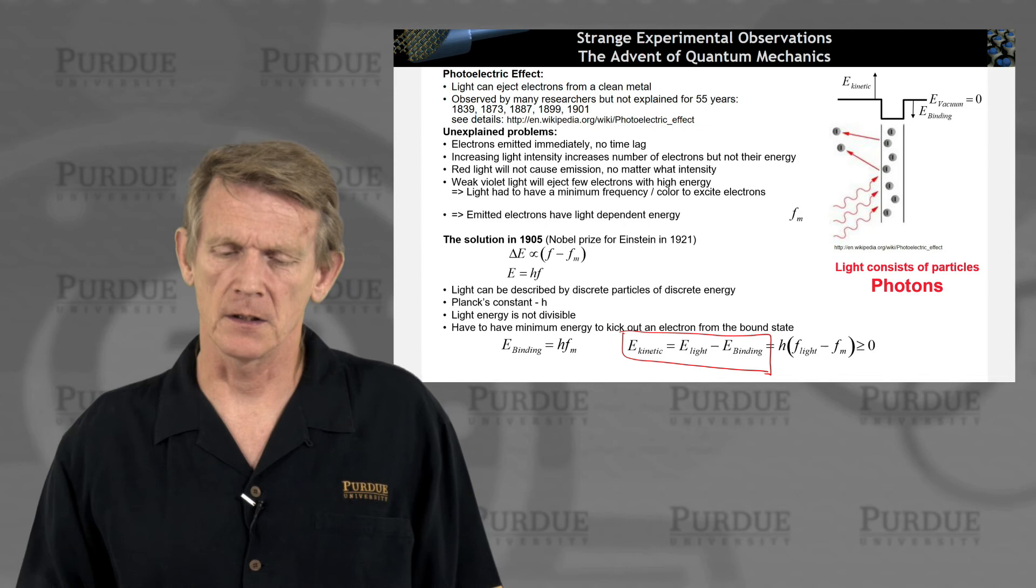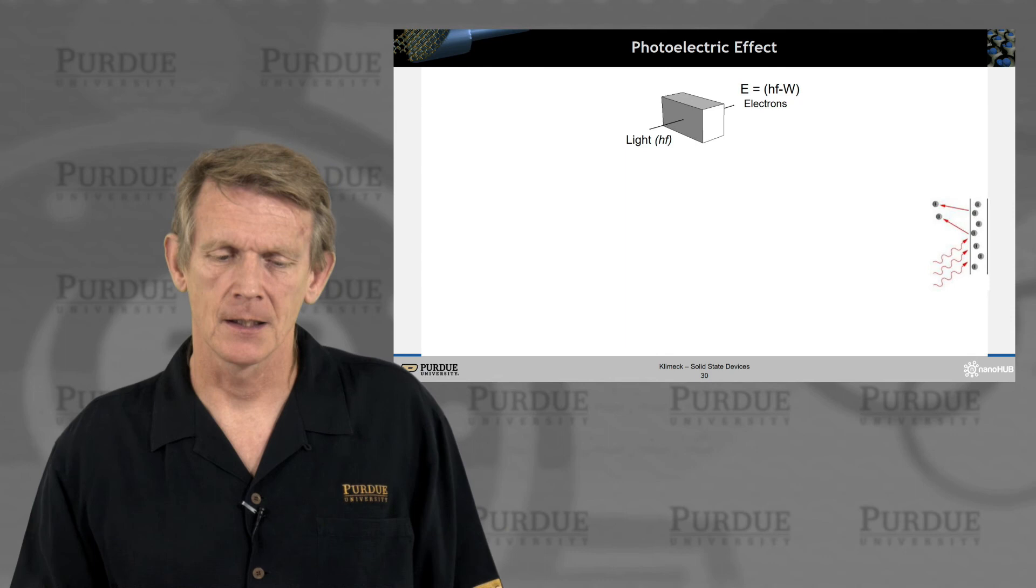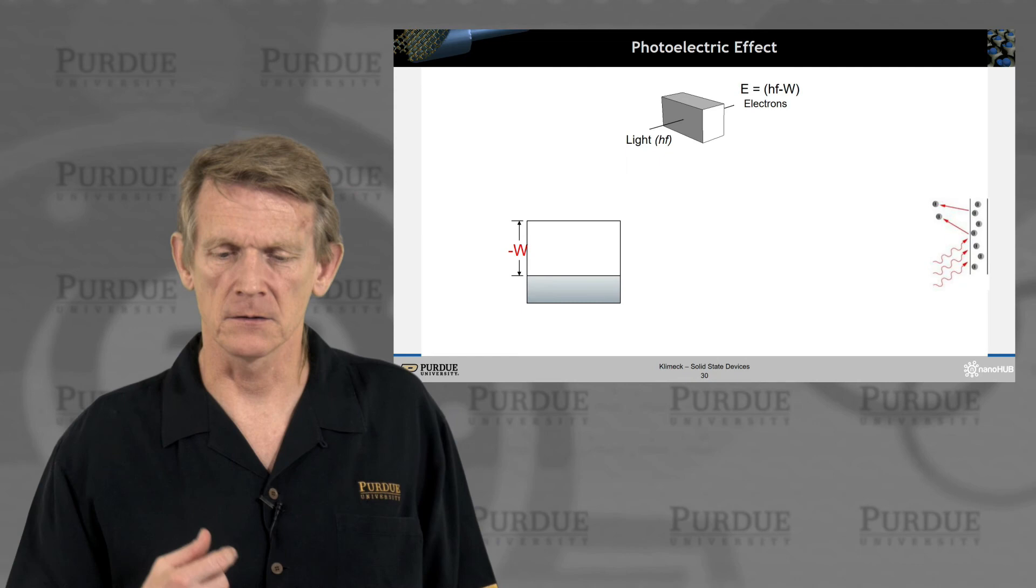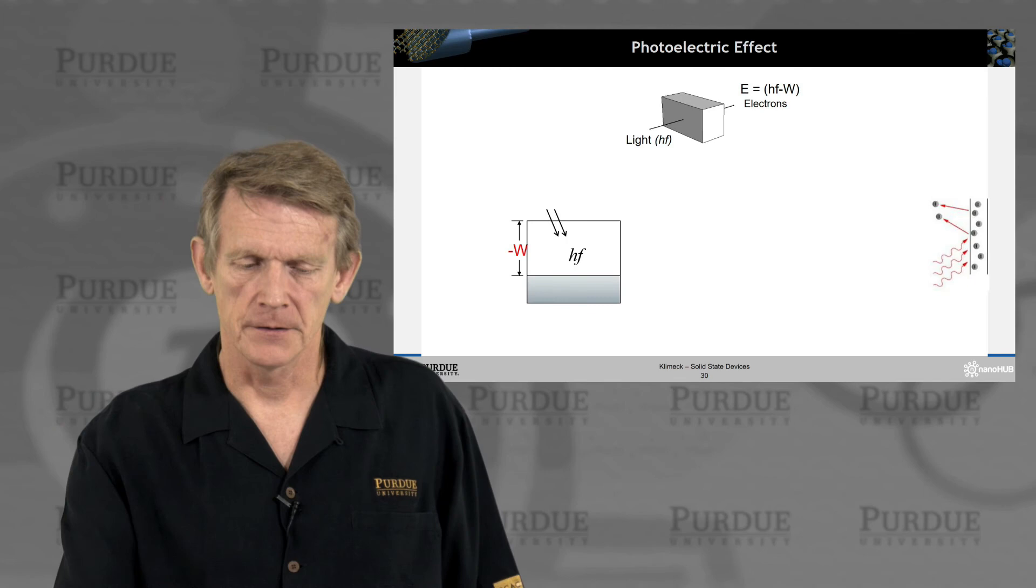All right. So that means that light consists of particles, and that's how we think of them as photons. All right. So here's another pictogram of that experiment. So you have light coming in, electrons coming out at an energy that is smaller than the light energy minus some binding energy or work function. That's the W.